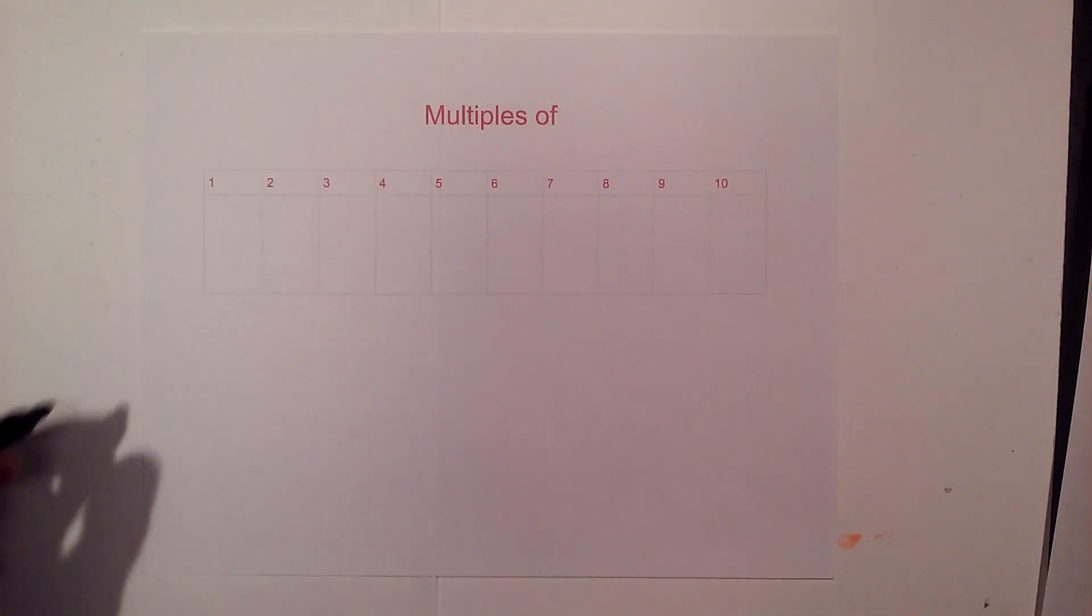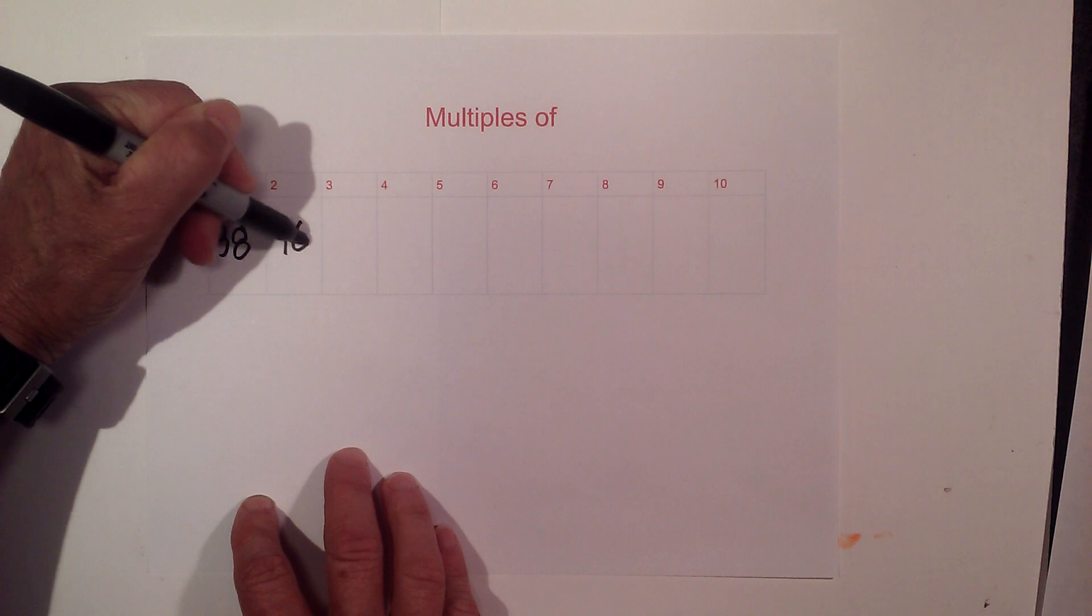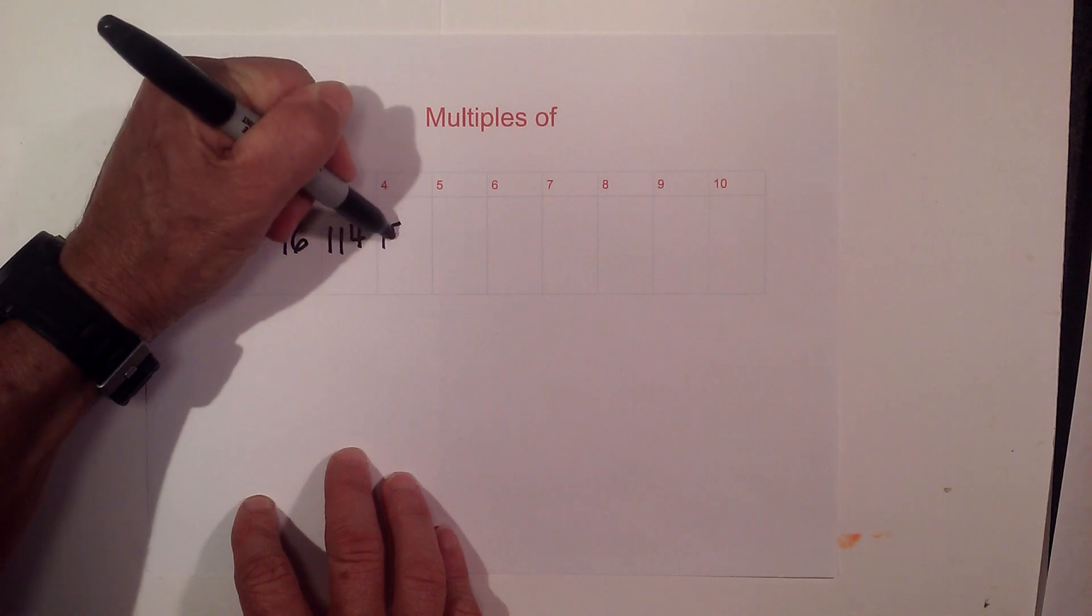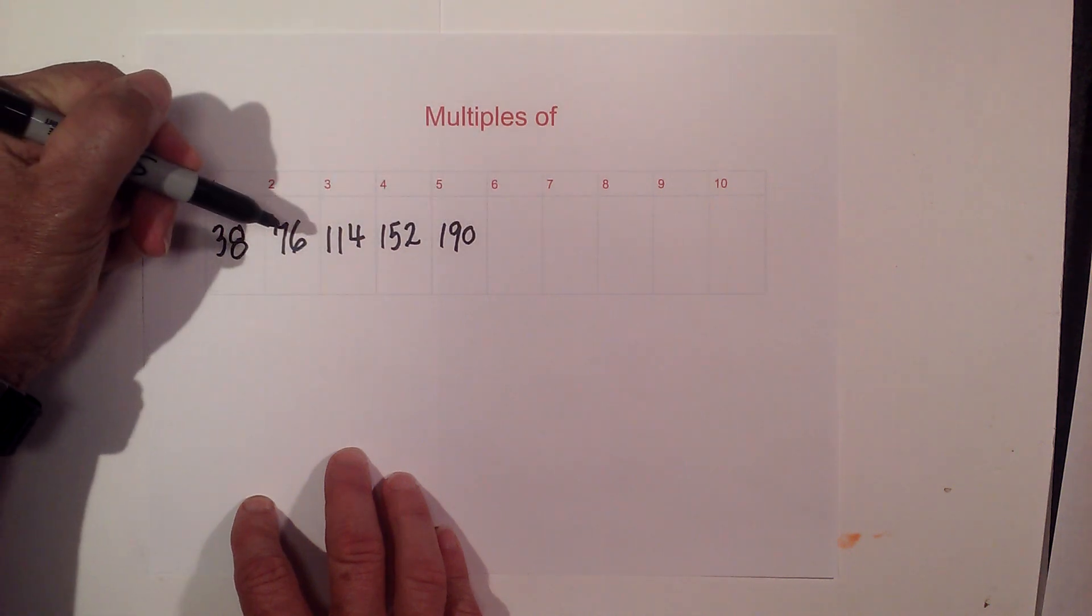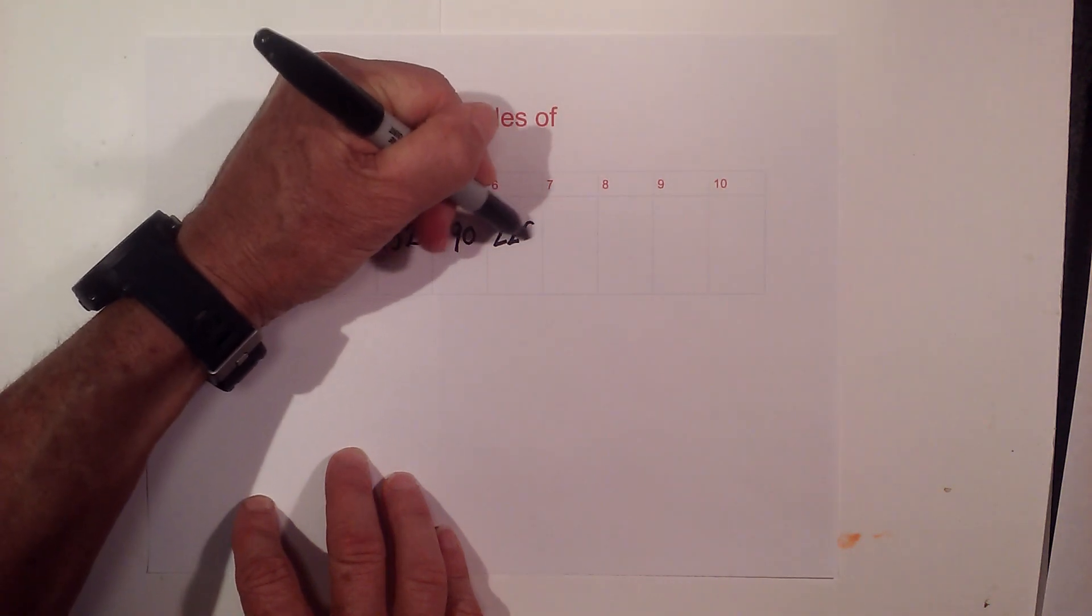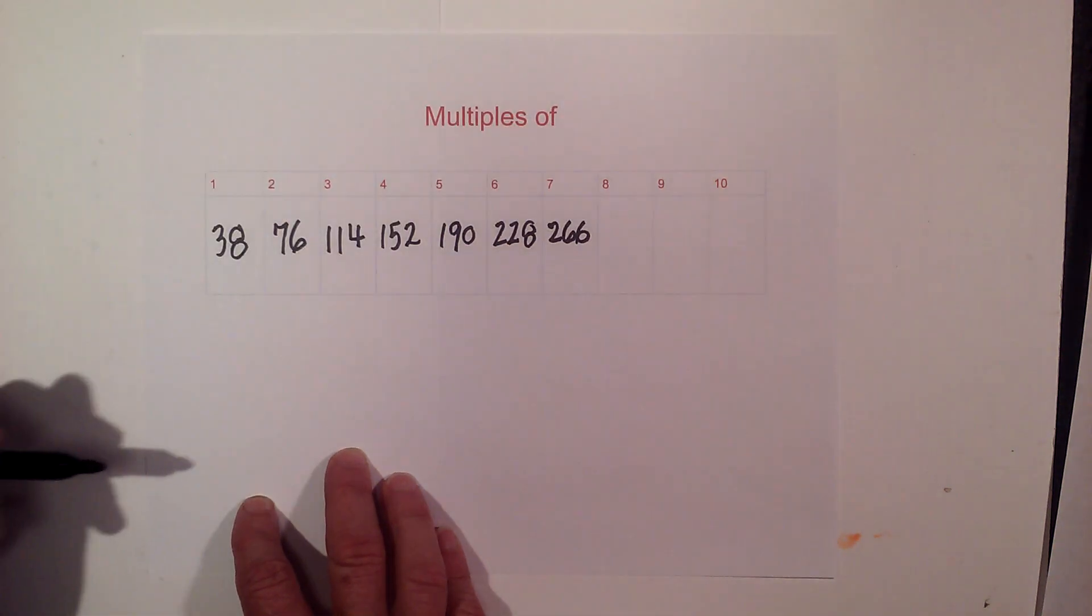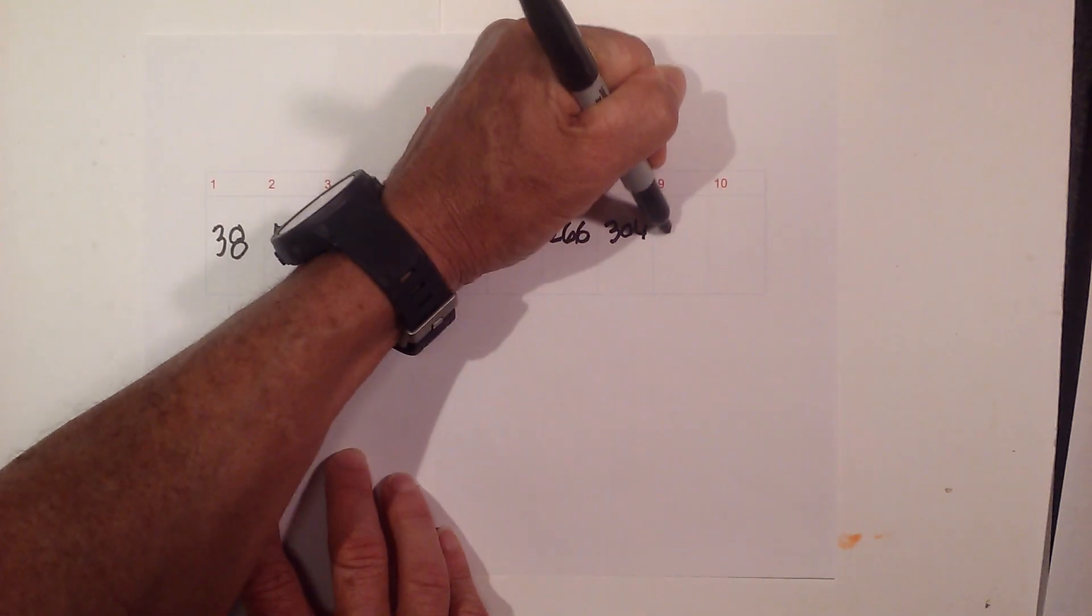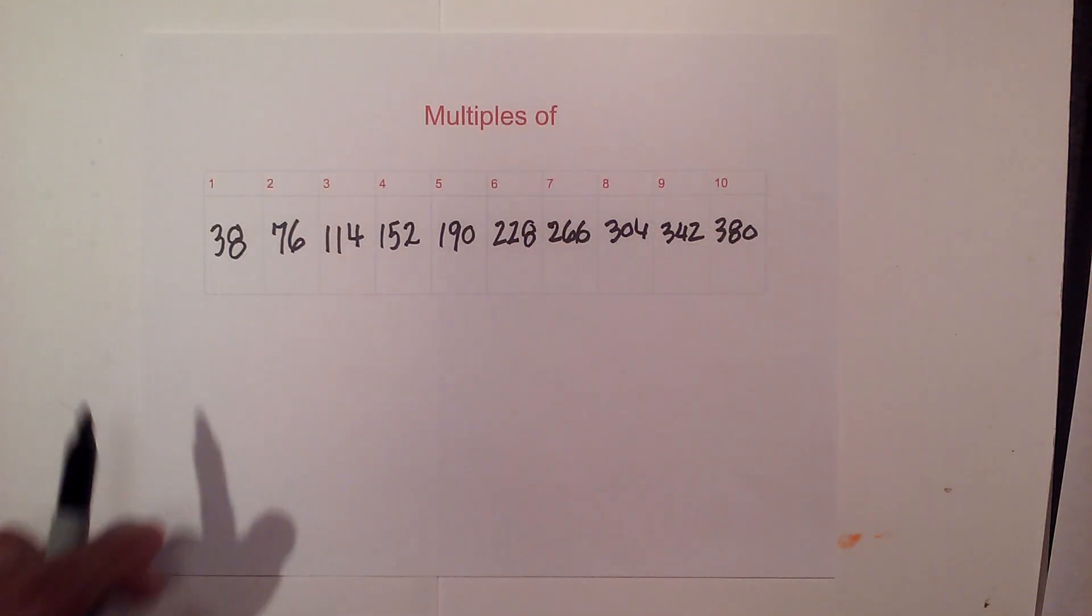Okay, the multiples of 38 are as follows: 38 times 2 is 76, times 3 is 114, times 4 is 152, times 5 is 190, times 6 is 228, 7 is 266, times 8 is 304, 9 is 342, and then 10 is 380. So here are the multiples.